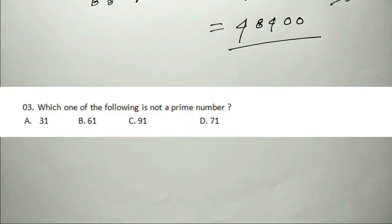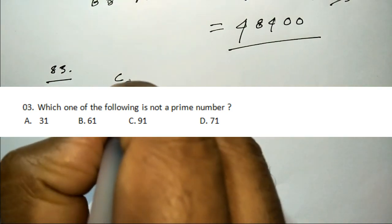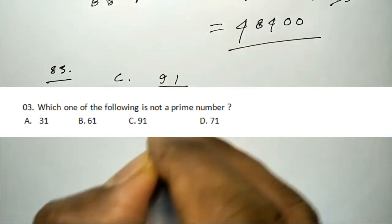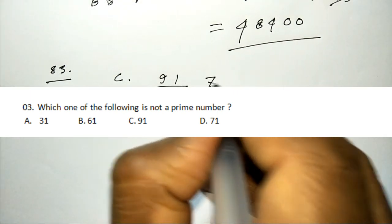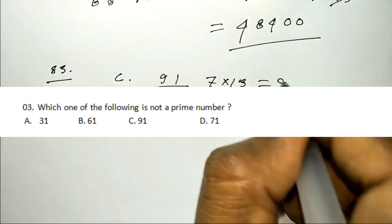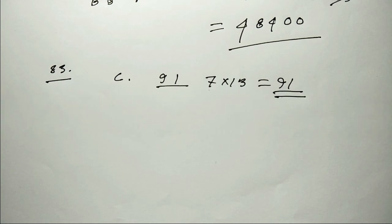Which of the following is not a prime number? Going to prime numbers — option C is 91. What is 91? You can open it as 7 times 13, because you cannot have 91 as a prime number. So 91 is not a prime number. Our answer is correct. Next question.